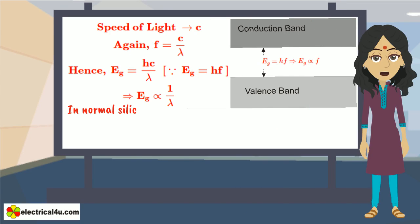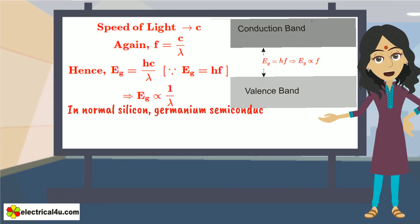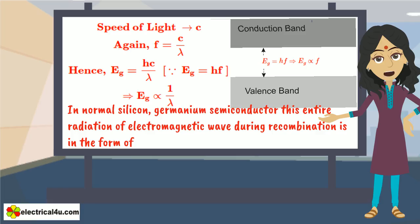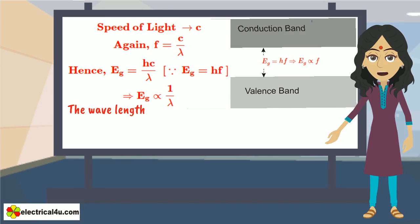In normal silicon, germanium semiconductor, this entire radiation of electromagnetic wave during recombination is in the form of infrared radiation. The wavelengths of the infrared are out of our visible range, so we cannot see it.